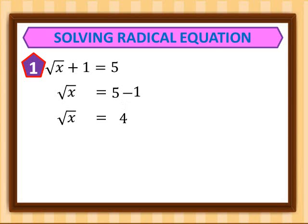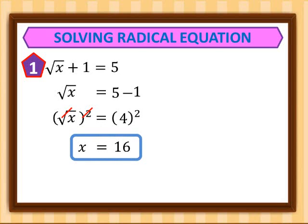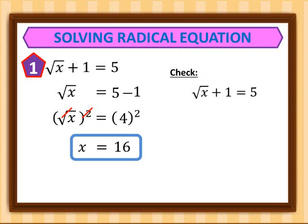5 minus 1 is equal to 4. Now we square both sides. We cancel the index and the exponent, leaving us x. And 4 squared is equal to 16. For number 1, we are going to check if x equals 16 is really the solution to our radical equation, using the same original equation.